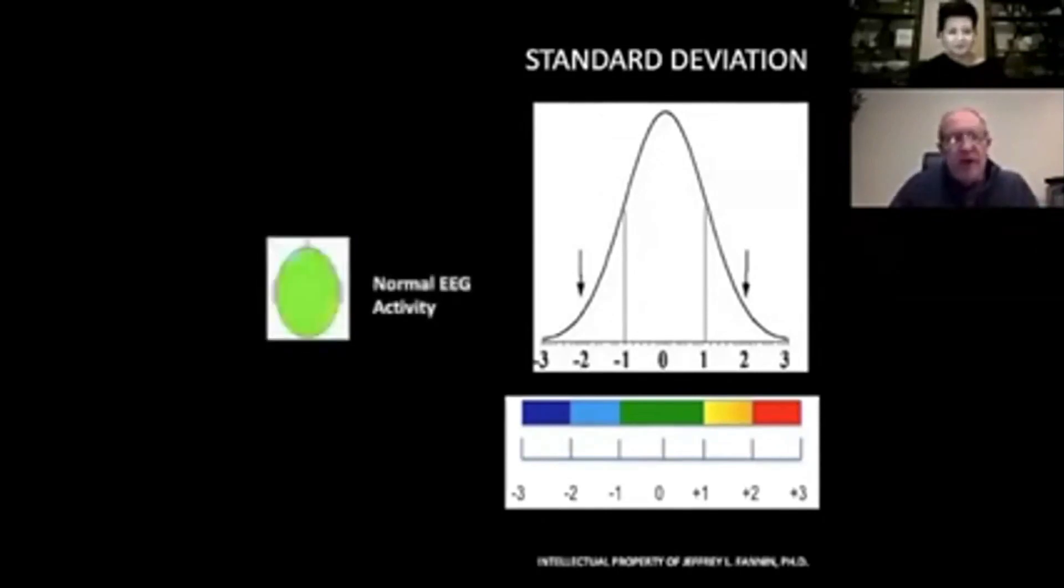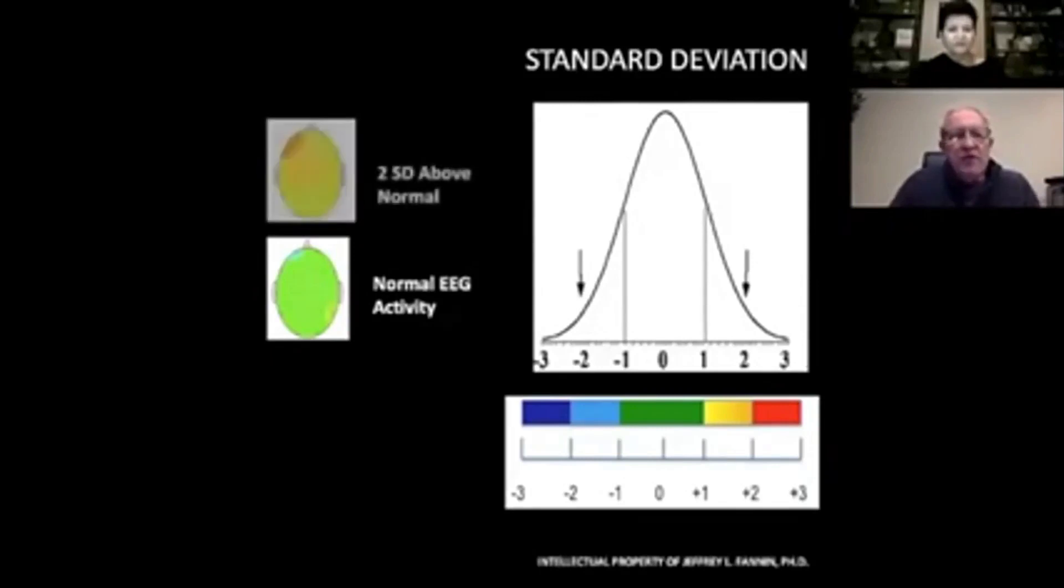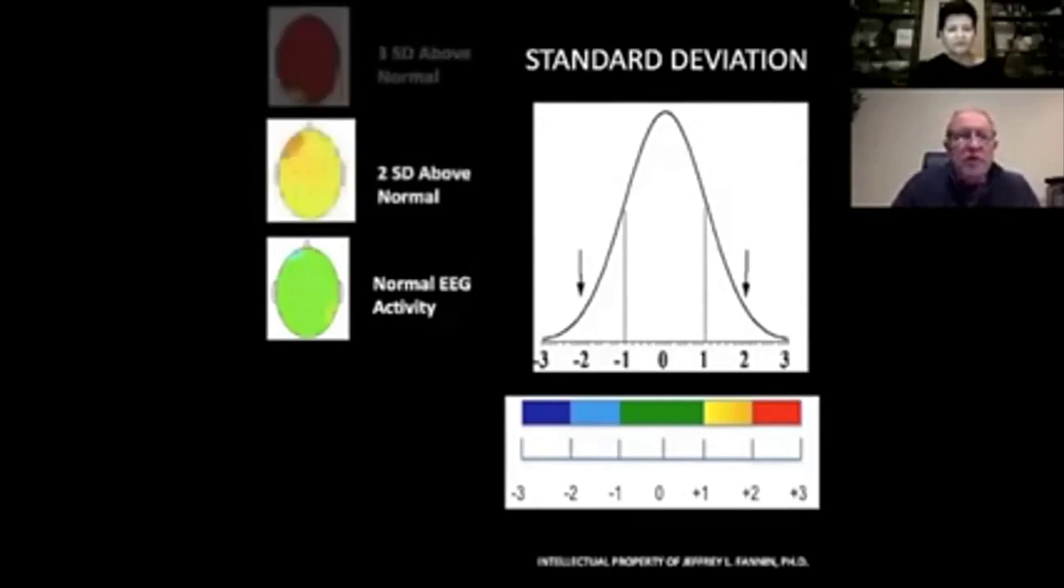When we see green in the brain maps, we're taking the squiggly lines and converting them to what we know as a quantitative EEG, a QEEG. The green means it's normal EEG activity. If it's yellow or orange, we know that it's two standard deviations above normal. If it's red, we know that it's three standard deviations above normal.